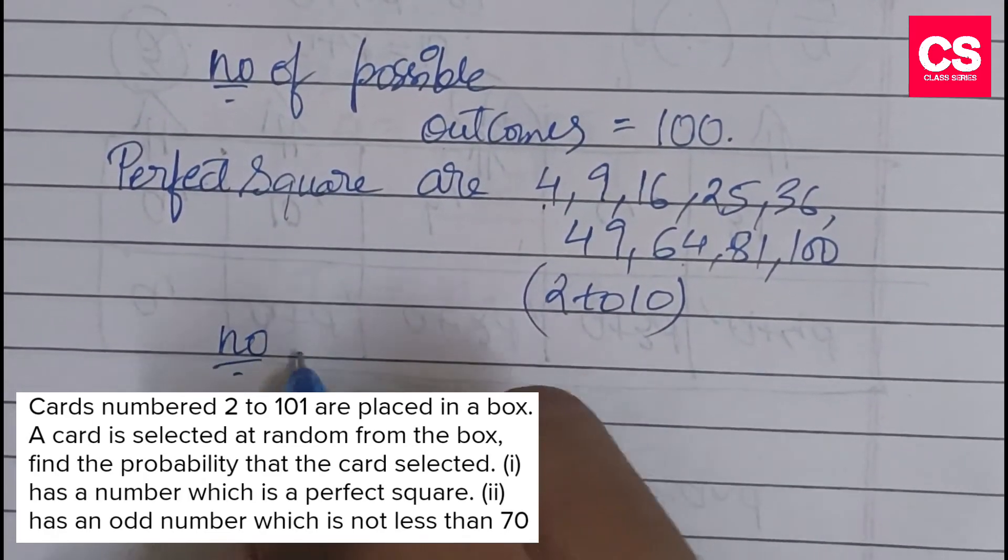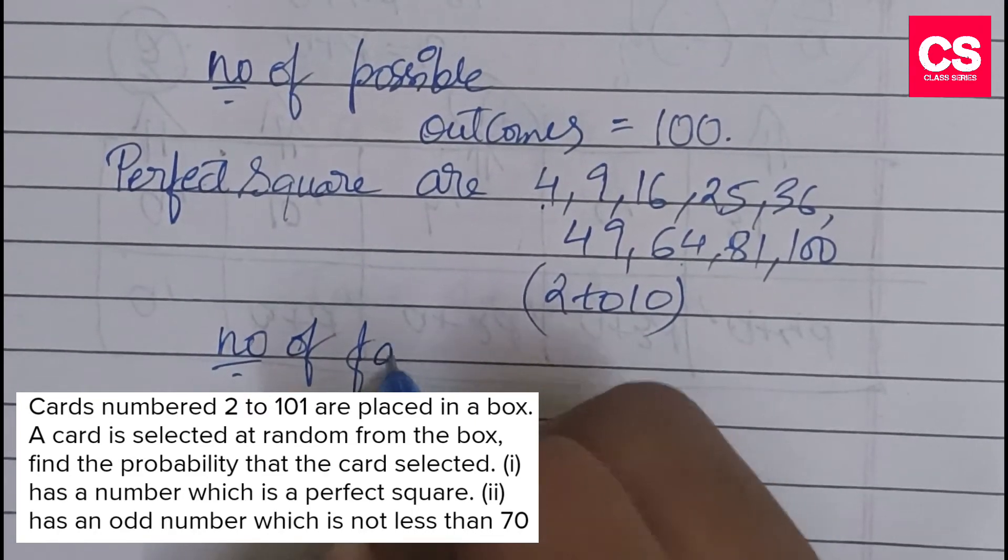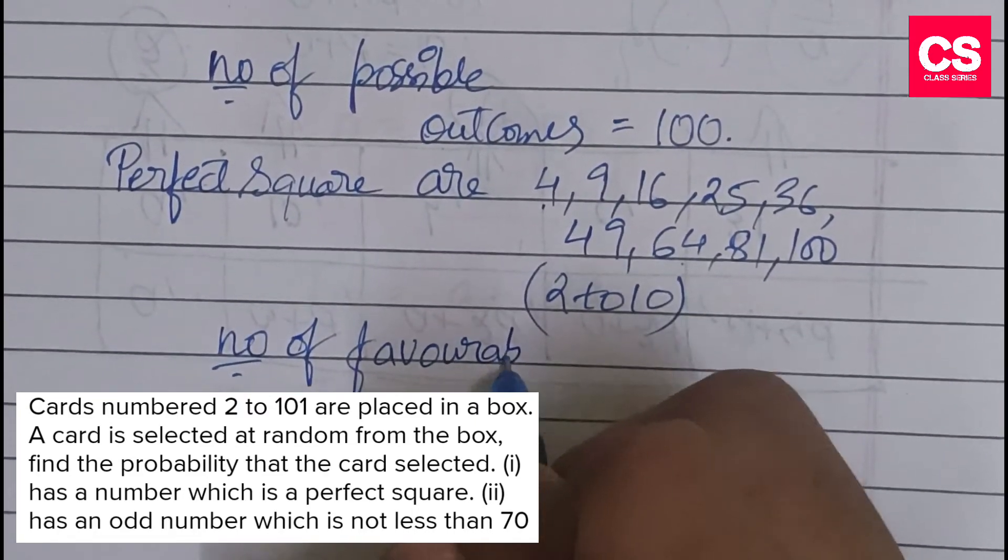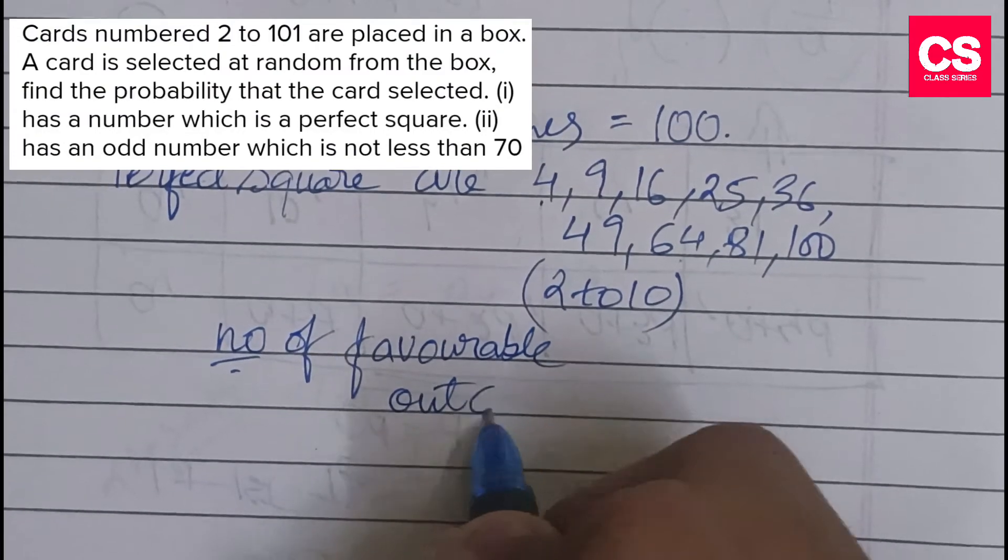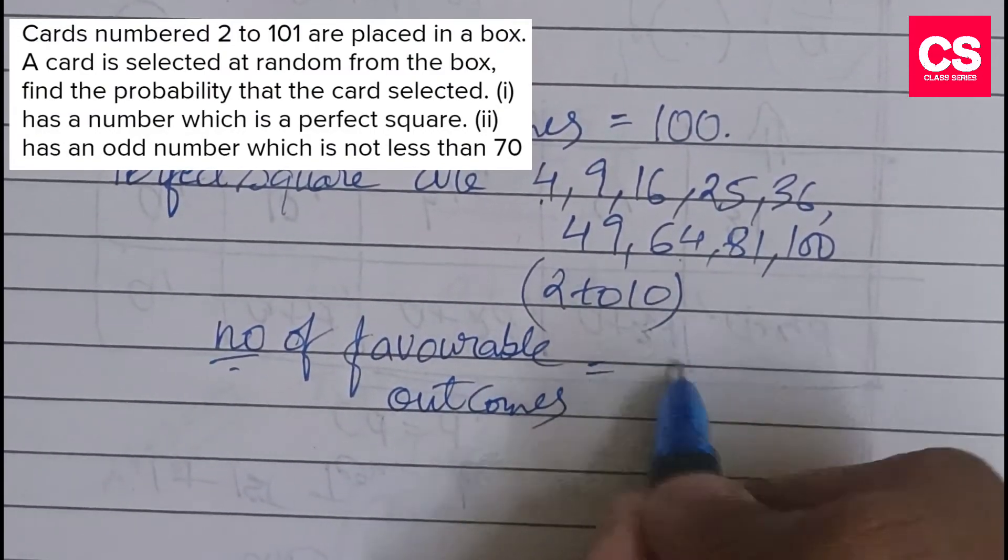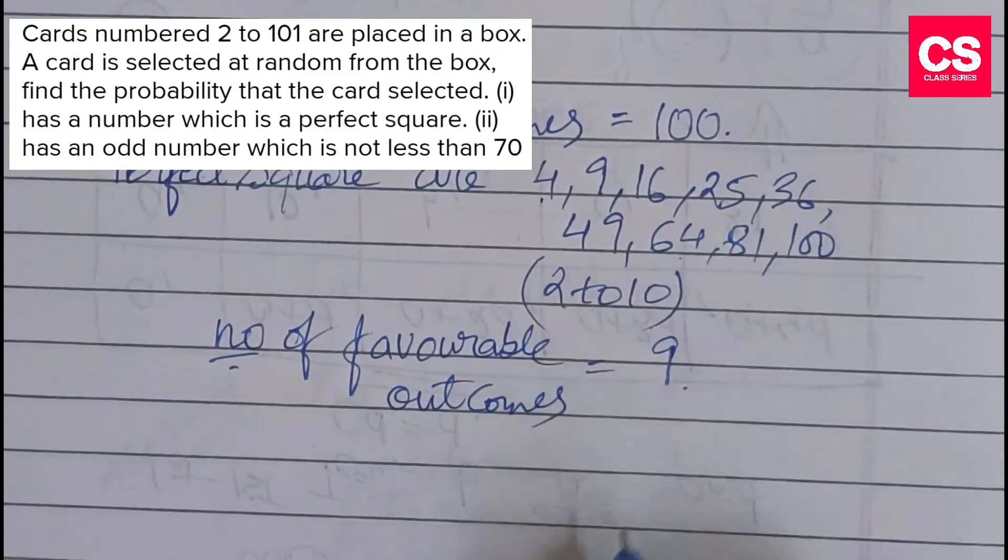So these will become our favorable outcomes. This is the number of favorable outcomes, which will be 9.